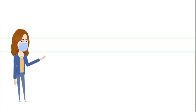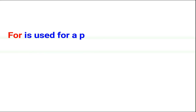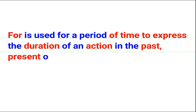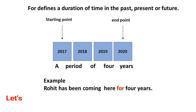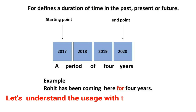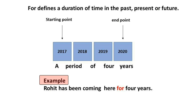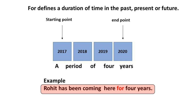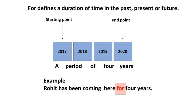The next preposition is 'for'. The preposition 'for' is used for a period of time to express the duration of an action in the past, present, or future. Let's understand the usage with the help of this figure. For example: 'Rohit has been coming here for four years.' This sentence tells us the duration of time for which Rohit came.